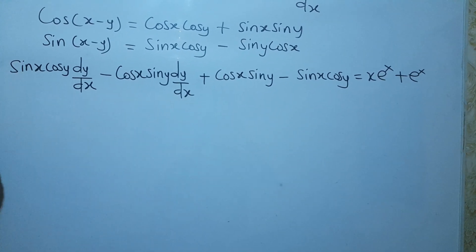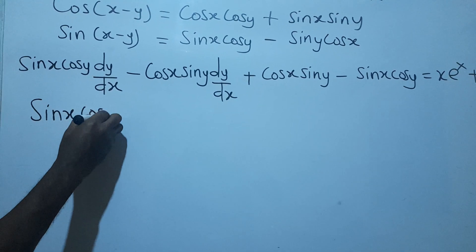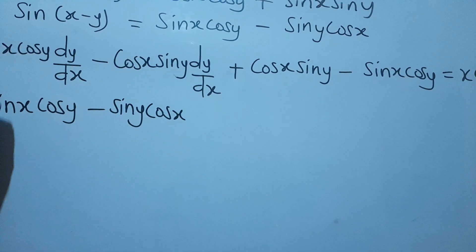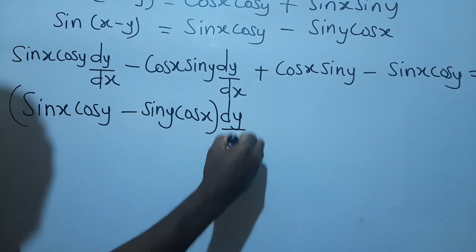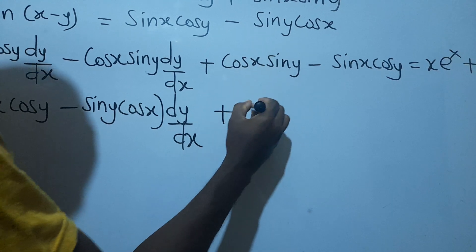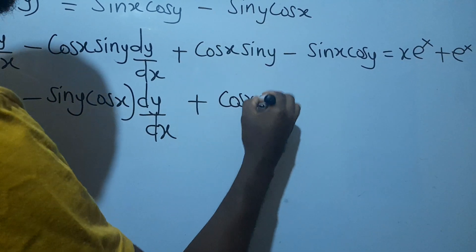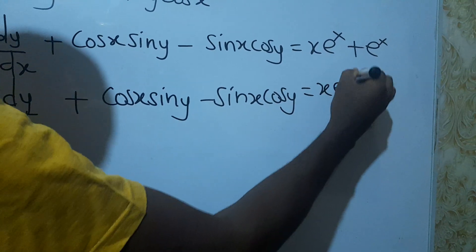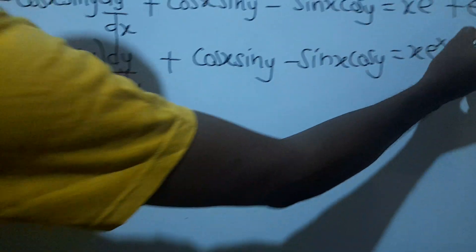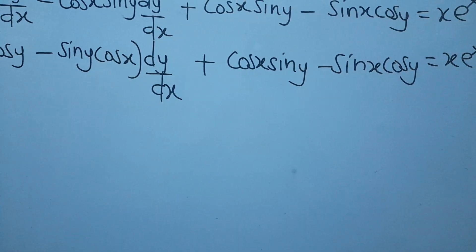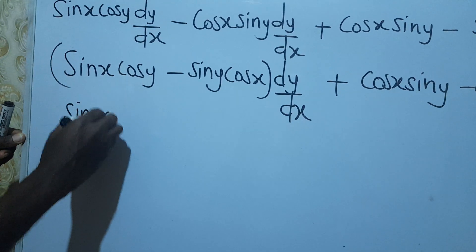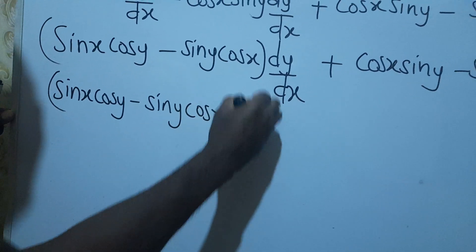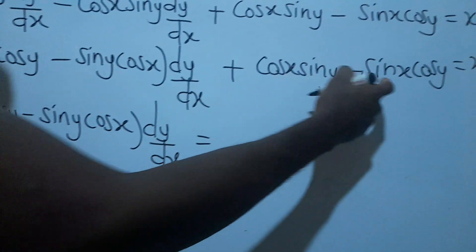I factor out dy/dx from the grouped terms, so I have (sin x·cos y minus sin y·cos x) times dy/dx, plus cos x·sin y minus sin x·cos y, equal to x·e^x plus e^x. Sending terms across, I get (sin x·cos y minus sin y·cos x) times dy/dx equal to negative(cos x·sin y minus sin x·cos y) plus x·e^x plus e^x.